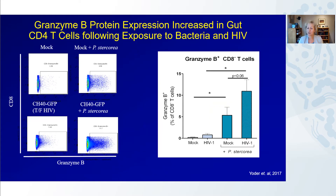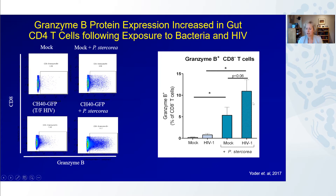We wanted to confirm that granzymes were increased at the protein level in these cells, so we did a similar experiment where we looked at lamina propria mononuclear cells infected with a GFP-expressing HIV and then exposed to P. storcheria in vitro. We looked at granzyme B protein expression by flow cytometry. You can see, either by the flow plots on the left or the summary data on the right, that when you infect with HIV only you get a little upregulation, but bacteria alone caused a much more marked increase, and HIV-infected plus bacteria-exposed cells showed the greatest increase in granzyme B expression.